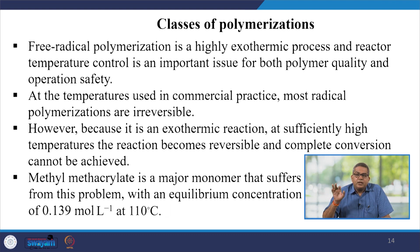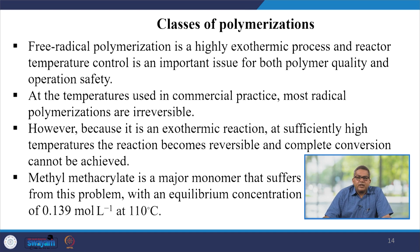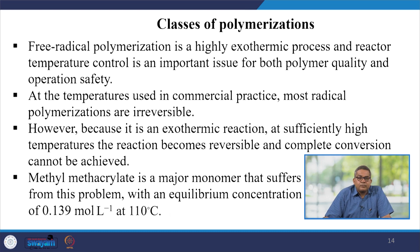A rise in temperature may trigger further polymerization and sometimes the polymer mass may get charred, so temperature control is very important to maintain polymer quality and operational safety. At the temperatures used for commercial practice, most radical polymerizations are irreversible. Because this is an exothermic reaction, at sufficiently high temperatures the reaction becomes reversible and complete conversion cannot be achieved. This is an irony in the polymerization process — complete conversion is a difficult task. Methyl methacrylate is a major monomer that suffers from this problem, with an equilibrium concentration of 0.139 mol/L at 110°C.